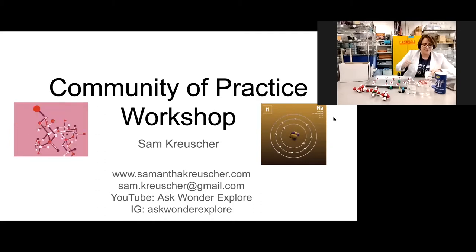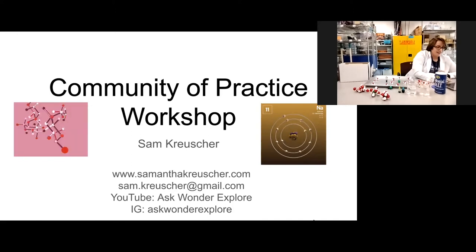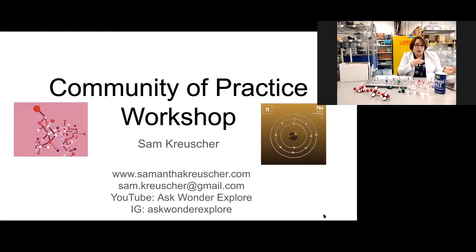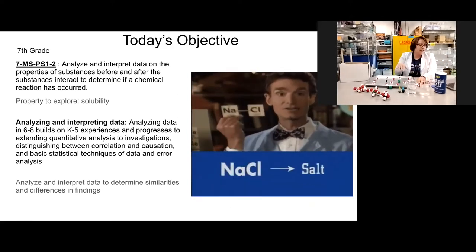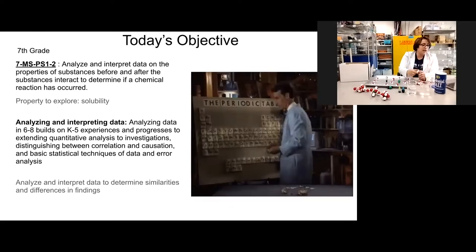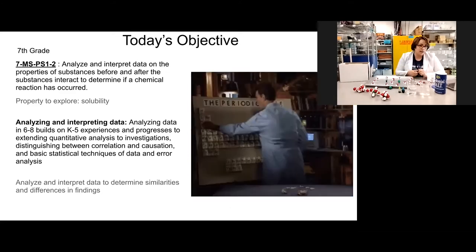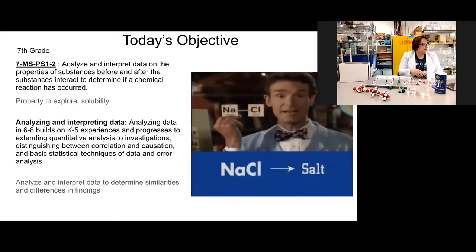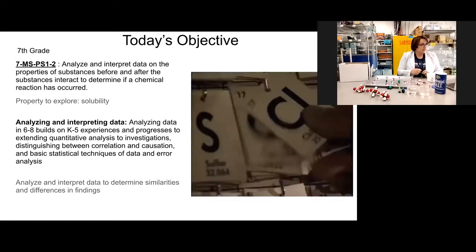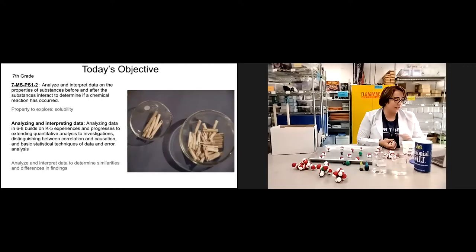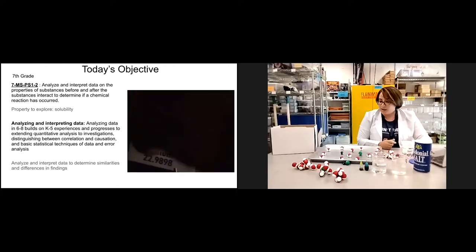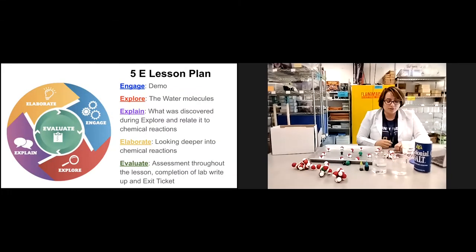The objective I'm going to address using this model is a seventh grade objective — being able to analyze data and determine whether or not a chemical reaction has happened. It's physical science 1-2 for seventh grade. The structure of the lesson uses a 5E lesson plan, where the first step is a short demo to get the kids interested.